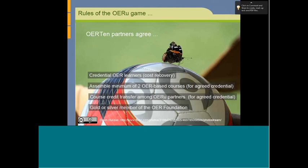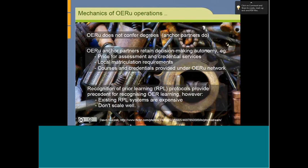Within the network, we aim to maximize credit transfer among OERU partners to ensure efficiency of the model, and each anchor partner is either a gold or silver member of the nonprofit OER Foundation — that revenue stream provides the infrastructure for the network to function. The OER University does not confer degrees; it is our anchor partners who confer the credentials. Our anchor partners retain full decision-making autonomy over aspects like the price they charge for assessment services and local matriculation requirements. We are not requiring any of our partners to change local matriculation requirements, and none of our anchor partners are required to change existing policy, because most institutions have the necessary policy mechanisms in place for the model to function.